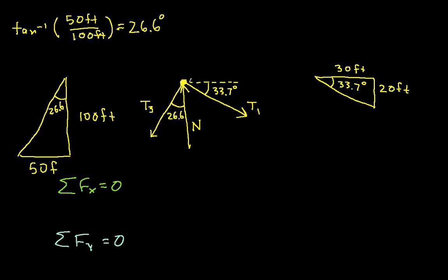For t1, we have the x component going this direction and the y component going this direction. The x component is going to be t1 cosine 33.7 degrees. The y component is going to be t1 sine 33.7 degrees. Now we actually know what t1 is. t1 is 5,769 pounds. So when it comes time to do the actual computations, we know what that is.